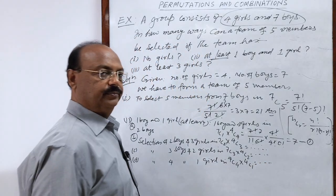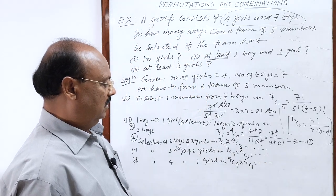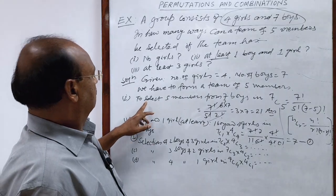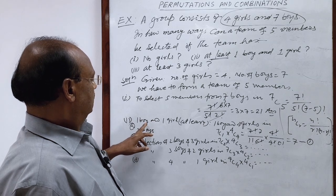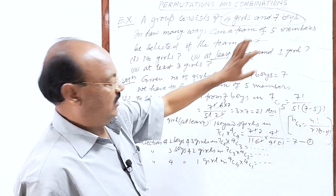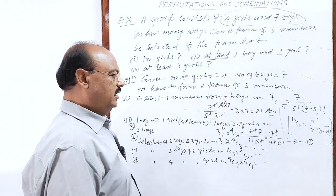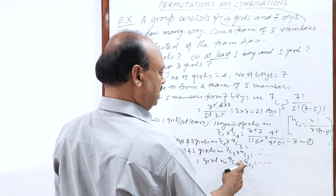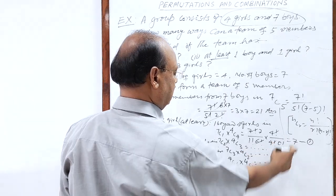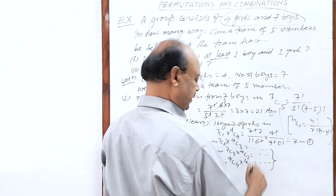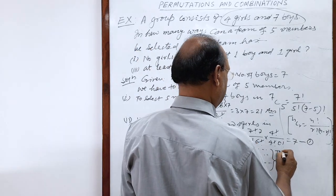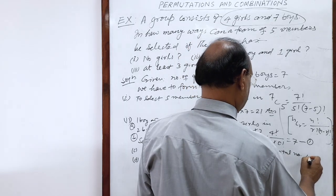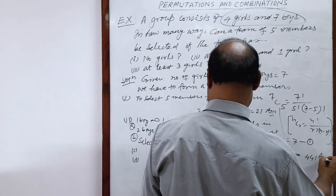Note: we cannot select all five boys, because the condition requires at least one boy and one girl. So finally, you calculate all the cases — seven, seven C two times four C three, seven C three times four C two, and seven C four times four C one — and the total number of selections is 441. This is the answer.